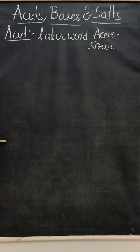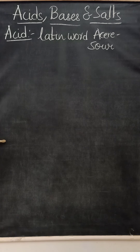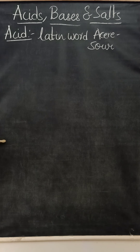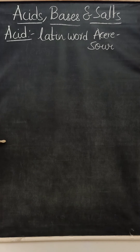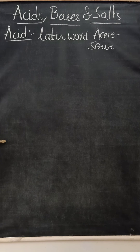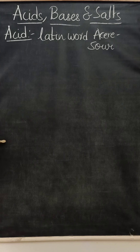If we consider substances like lemon juice, vinegar, or curd, they are sour in taste. Why are they sour in taste? Because in these substances, some chemicals like acids are present. That's why they are sour in taste, and these substances are said to be acidic in nature.